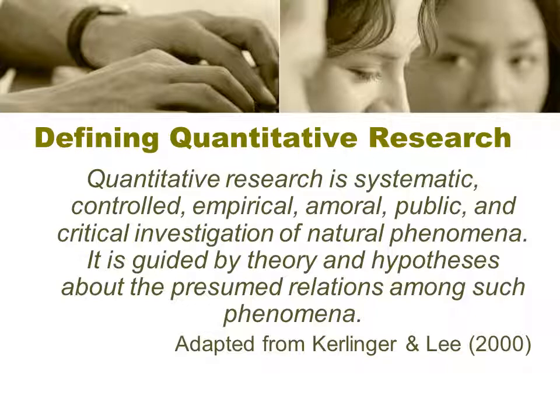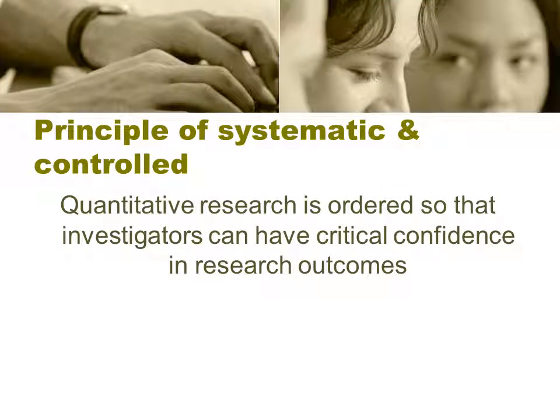As we're defining quantitative research, quantitative research is a systematic, controlled, empirical, amoral, public, and critical investigation of natural phenomena. It's guided by theory and hypotheses about the presumed relationships among such phenomena. The principles of systematic and controlled quantitative research are ordered so that investigators have critical confidence in the research outcomes.